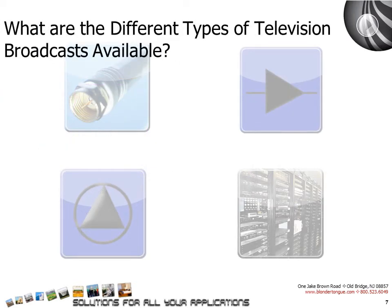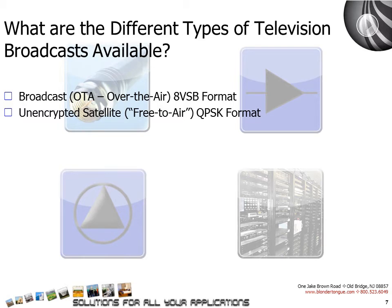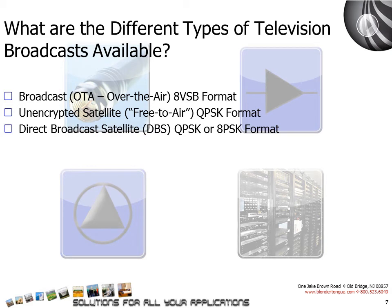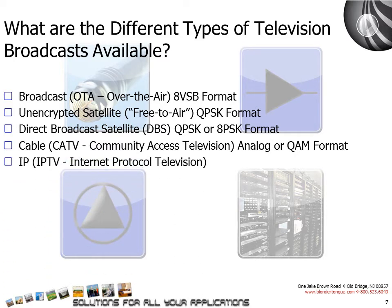What are the different types of television broadcasts available? Broadcast over the air is an 8VSB format. Unencrypted satellite, free to air, is a QPSK format. Direct broadcast satellite, DBS — your Dish Network and DirecTV — is either QPSK or 8VSB format. Cable, CATV, community access television, is analog or QAM format. And finally, IP television is an IP format.